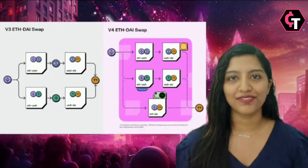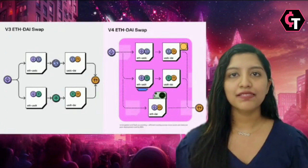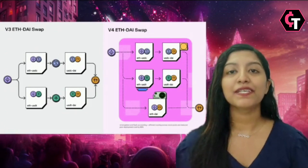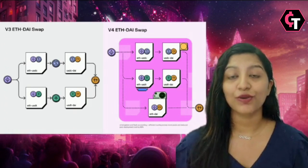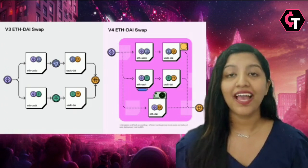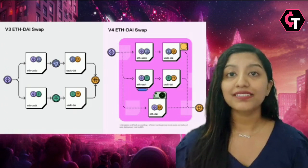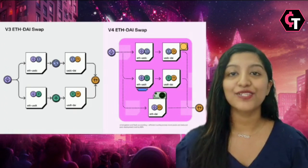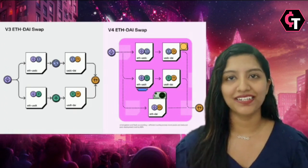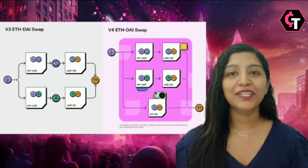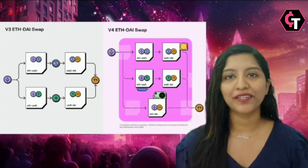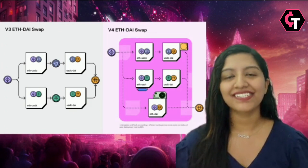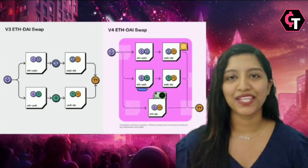Additionally, hooks facilitate on-chain limit orders and automated deposits to lending protocols. This means liquidity pools can execute orders only when specific price thresholds are met, and they can automatically reinvest fees or lend assets during dormant periods.